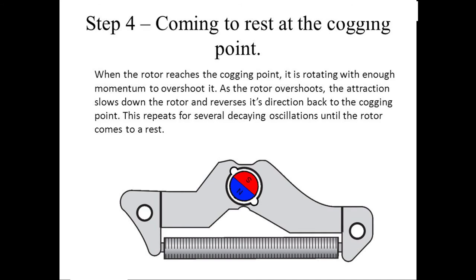Step 4: Coming to rest at the cogging point. When the rotor reaches a cogging point, it is rotating with enough momentum to overshoot it. As the rotor overshoots, the attraction slows down the rotor and reverses its direction back to the cogging point. This repeats for several decaying oscillations until the rotor comes to rest.